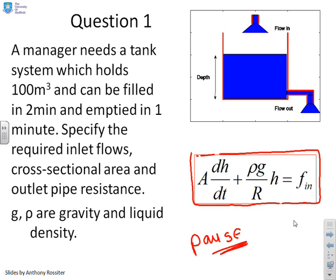Now you'll remember that a typical model for a tank is something like this. A dh dt, so A the cross-sectional area, dh dt, h is the depth, plus rho g over r, where r is a property linked to this outlet pipe, times h equals f in. g is gravity and rho, the liquid density. So I'm going to go on now and look at the solution.